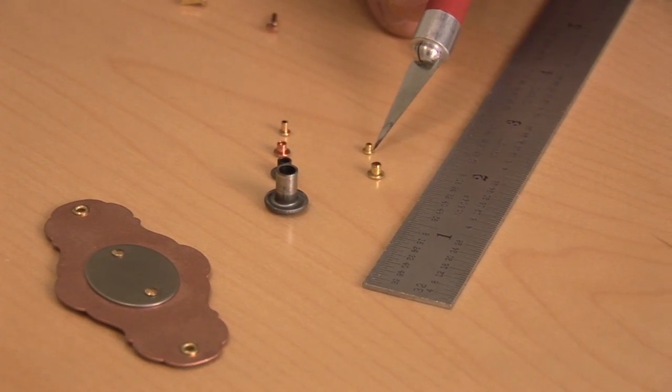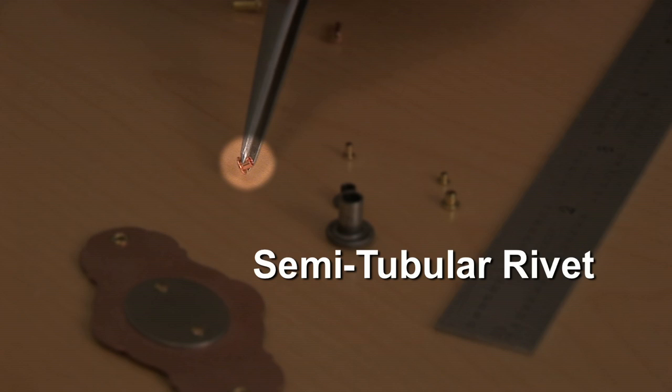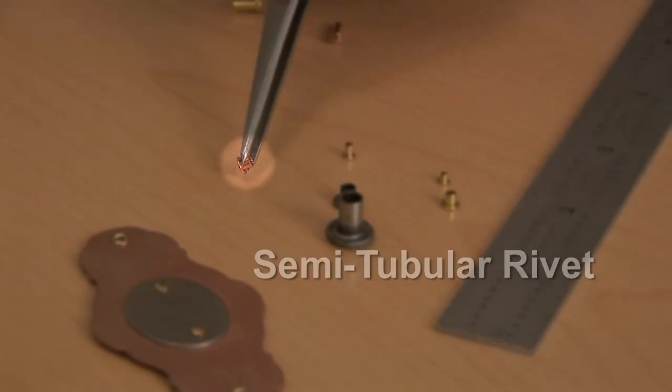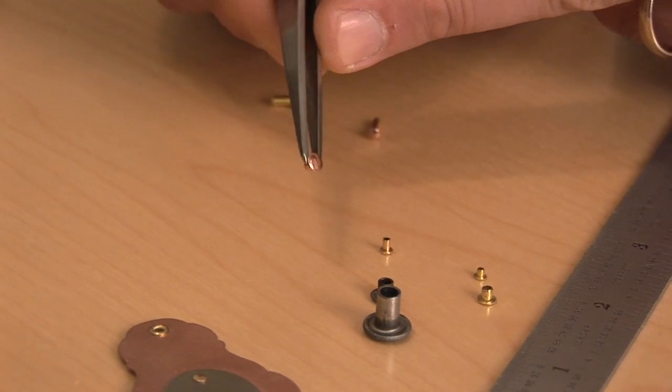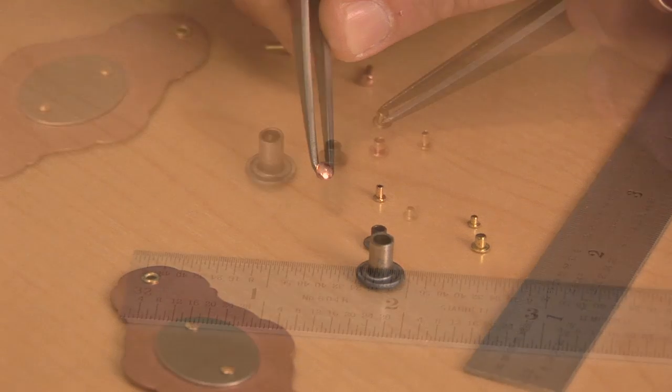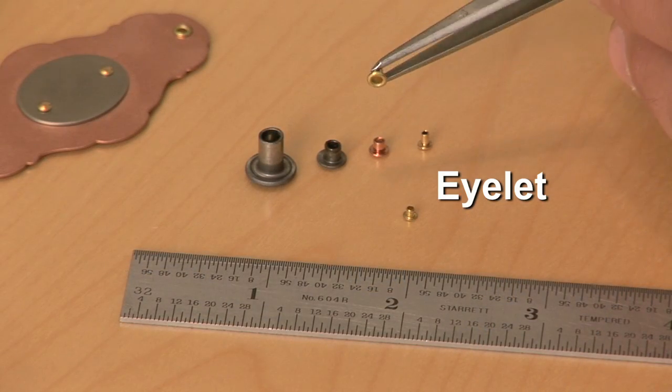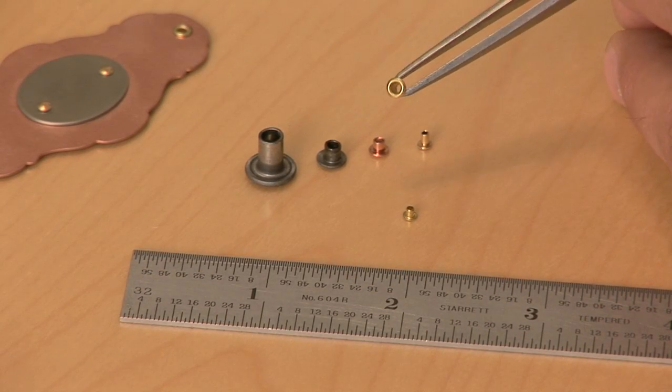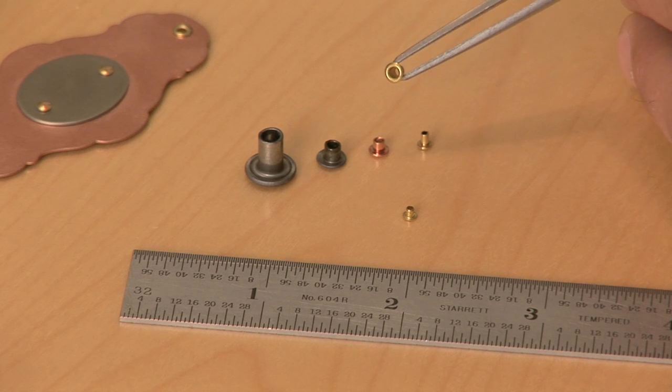What's the difference between an eyelet and a rivet? Well, this is a semi-tubular rivet, with a tube on one end and a solid head on the other. Now, here's an eyelet, same size and diameter, but the tube goes all the way through.